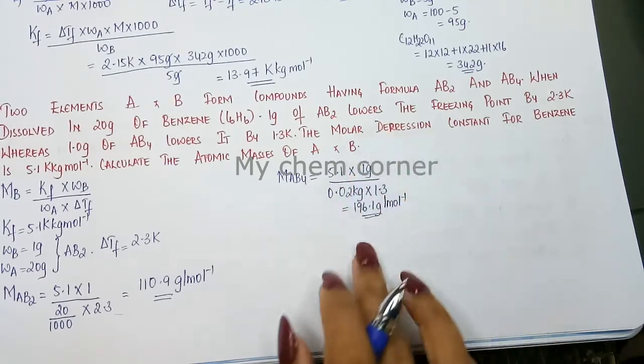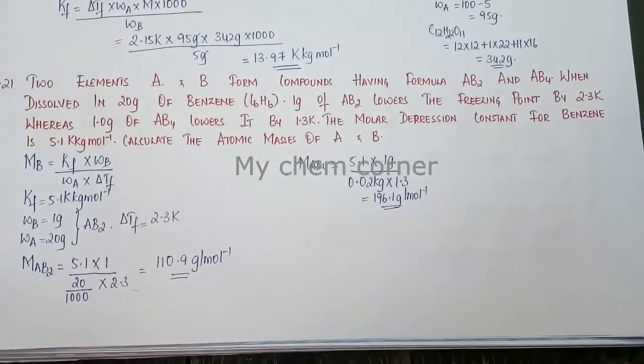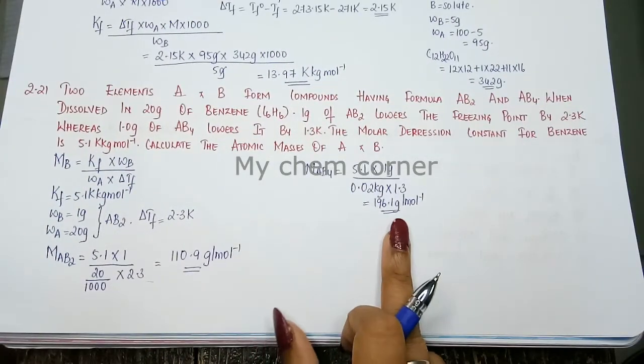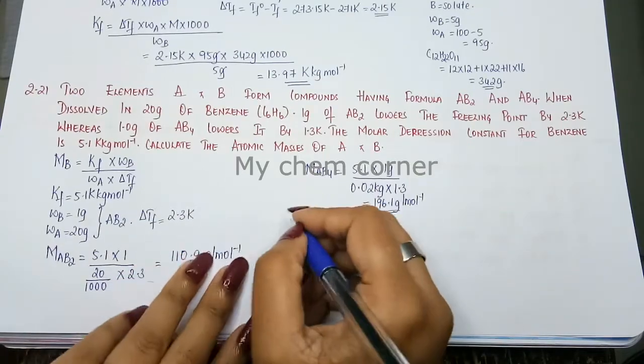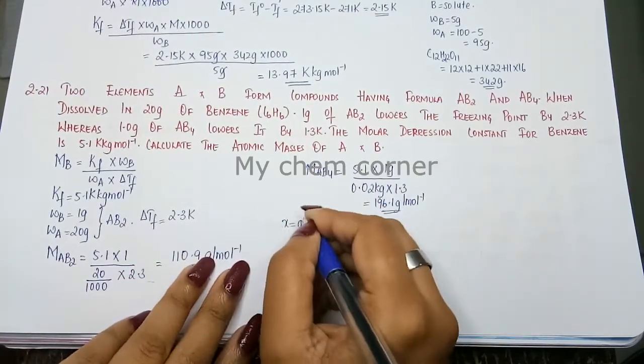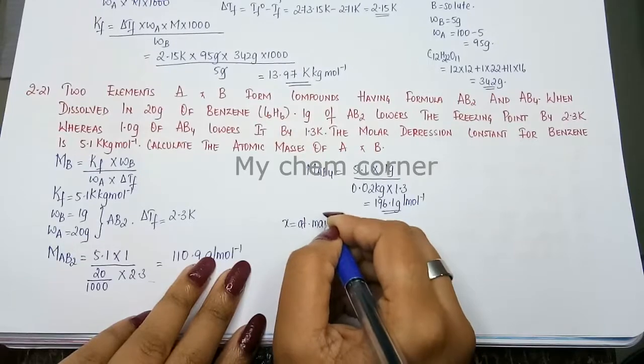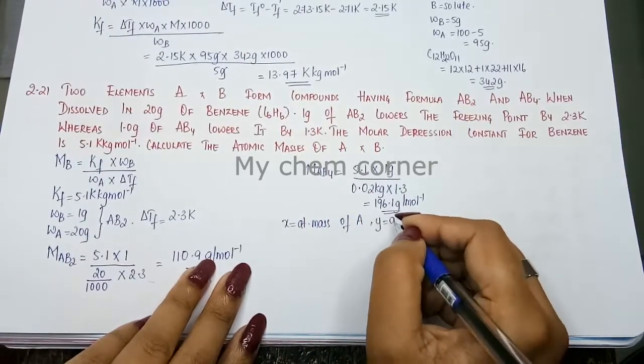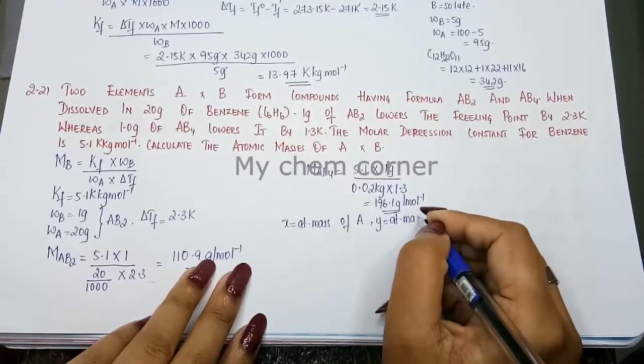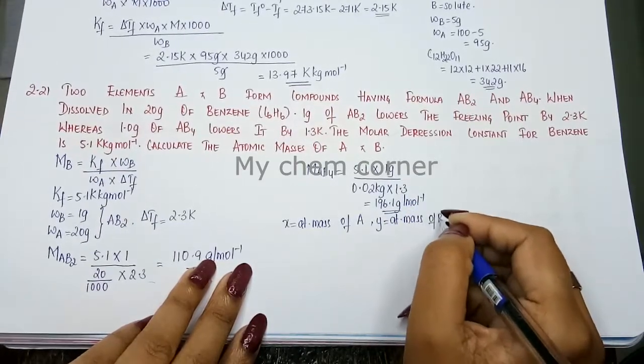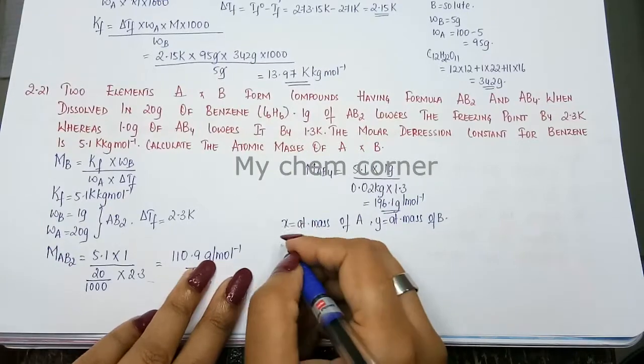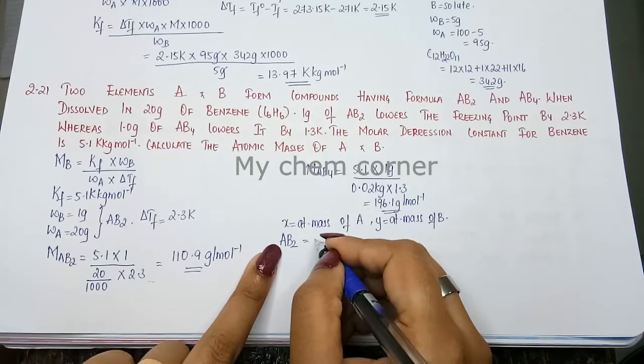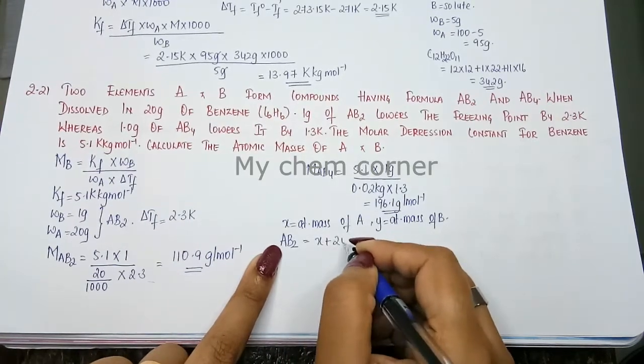This is going to be the molar mass for the compound of AB4 type. Now once you know the molar mass for AB4 type, now that you know what is the molar mass of this you are going to take X as the atomic mass of A and Y as the atomic mass of B.